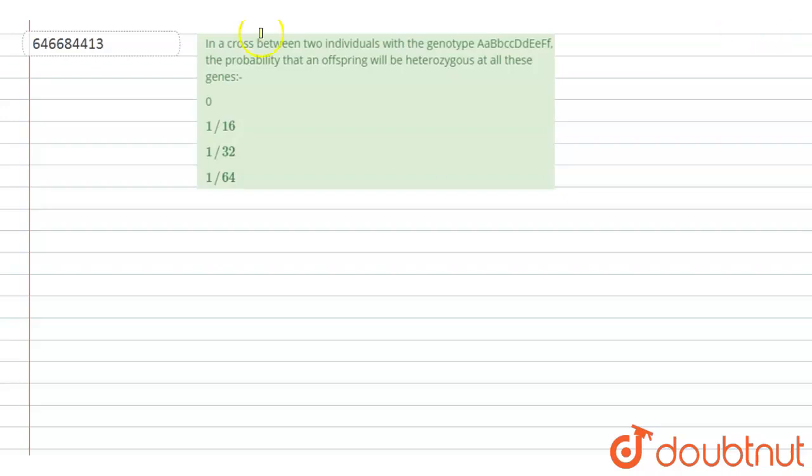Question is: in a cross between two individuals with genotype this, the probability that an offspring will be heterozygous at all these genes. Options are 0, 1 by 16, 1 by 32, 1 by 64.